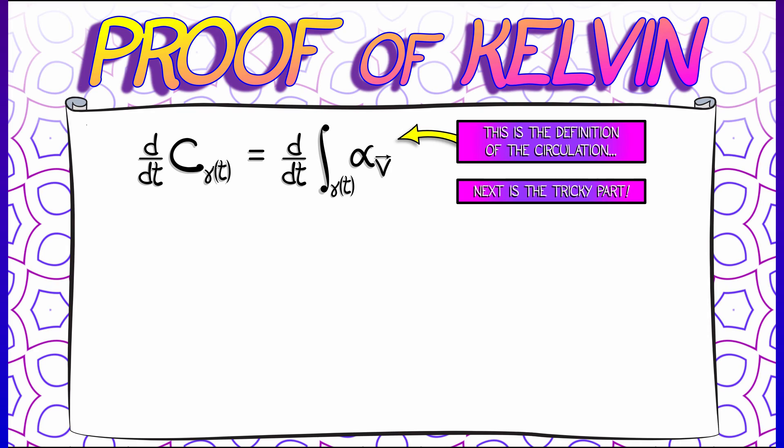Now, what I've got to do is pull that derivative into the integral sign. And that's the tricky part, because what I get is the material derivative of alpha sub v.